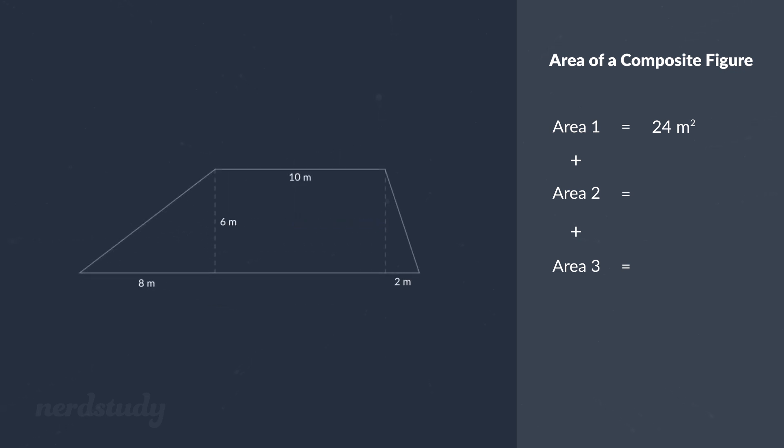Now first of all we know that this shape in here is a rectangle since a rectangle has exactly four right angles which we can identify by these boxes here.